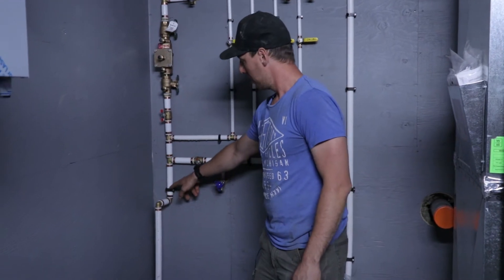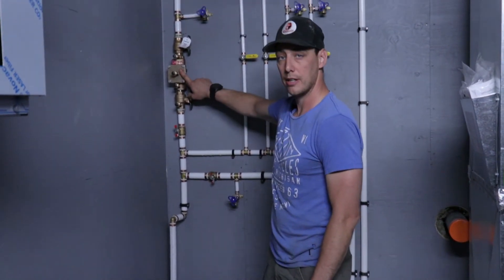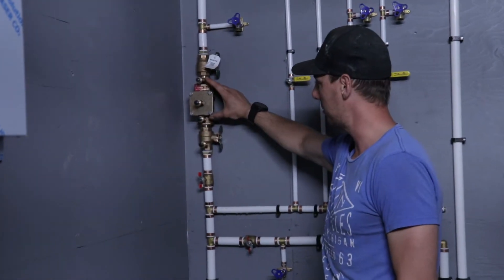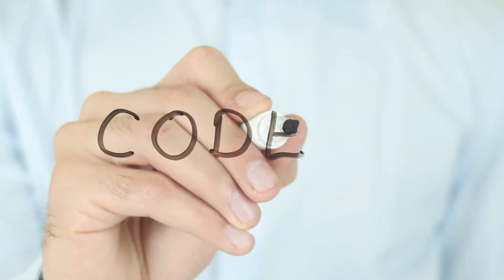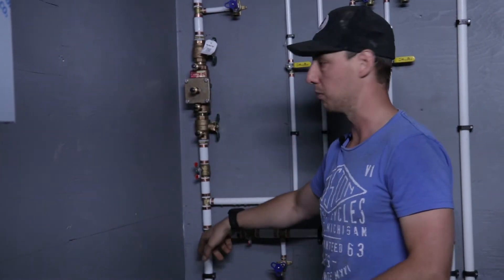We have a one-inch line that comes straight up to a dual check valve. It's a testable device, and it's code for us to have them for irrigation. This prevents dirt from coming back in and getting into your domestic water.